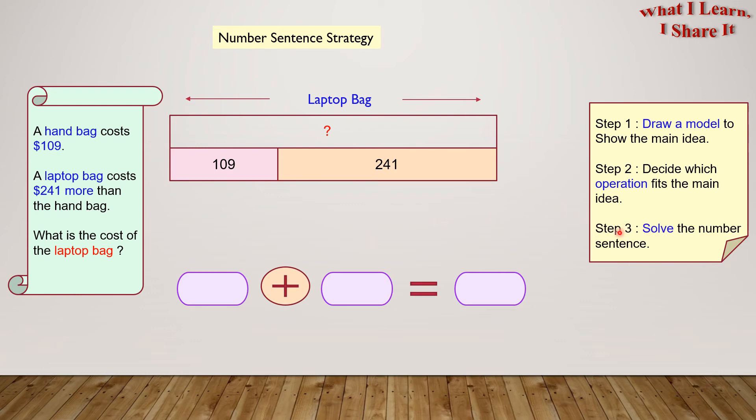Step 3: Solve the number sentence. So here we have 109, which comes from here, plus 241, which comes from here,